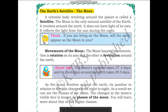A celestial body revolving around a planet is called a satellite. A satellite is any celestial body that revolves around a planet. The moon is the only natural satellite of the Earth.